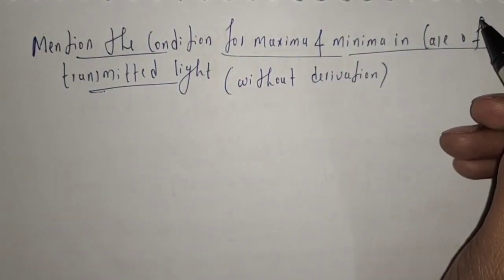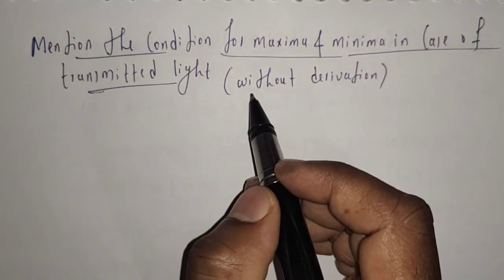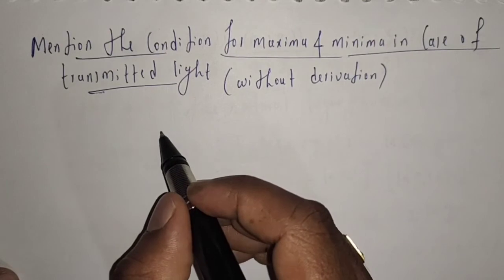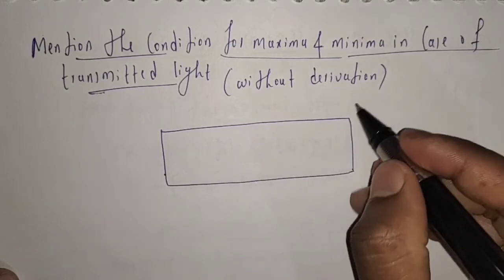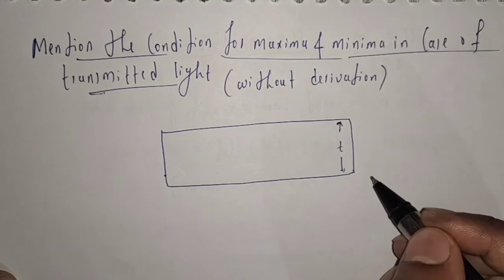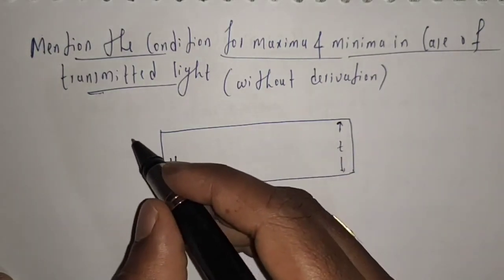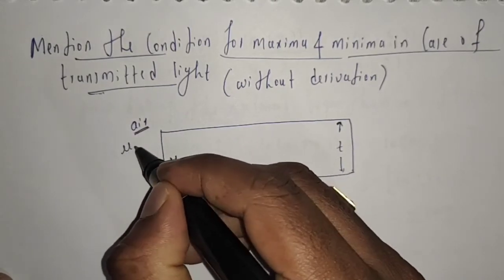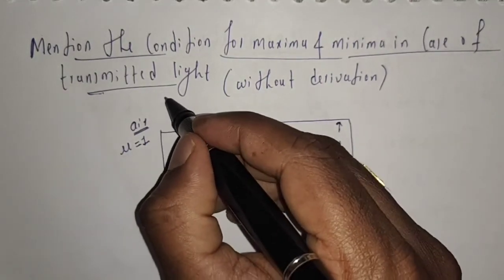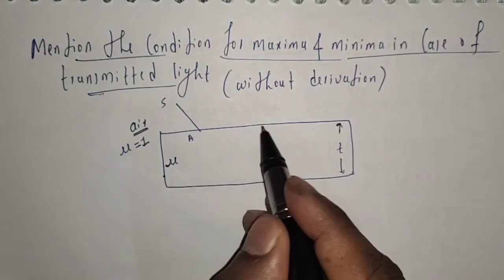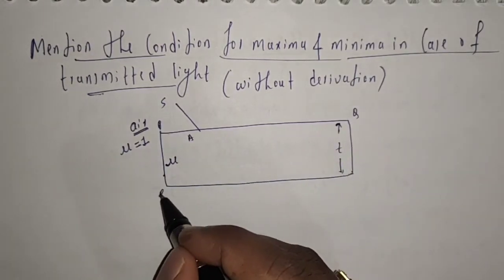In the last video, we derived the condition for reflected light. But in transmitted light, we need to write the condition directly. Here, I am going to consider a thin film having thickness T and refractive index mu. This thin film is surrounded by air, and its refractive index is equal to 1. Now, let us suppose a light ray SA is incident on the thin film, and let us denote its surfaces by PQ and RS.